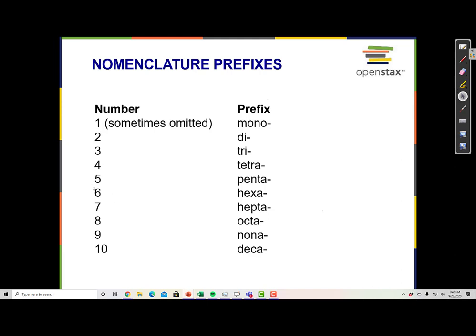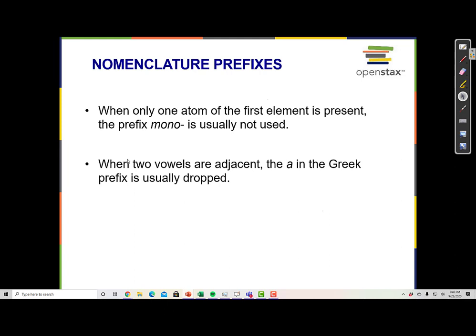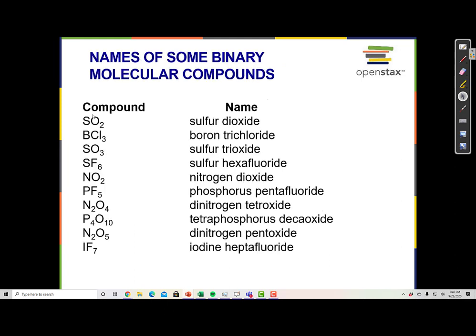Here are some examples of covalent compounds and their names. SO2 has one sulfur and two oxygens — sulfur dioxide. We might think to say monosulfur dioxide, but the 'mono' is usually dropped from the first element when there's only one atom. BCl3 is boron trichloride — one boron, three chlorines. SO3 is sulfur trioxide. SF6 is sulfur hexafluoride.